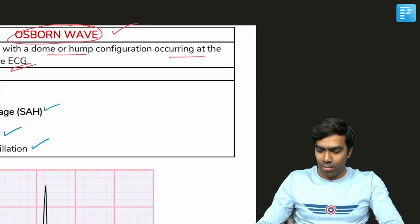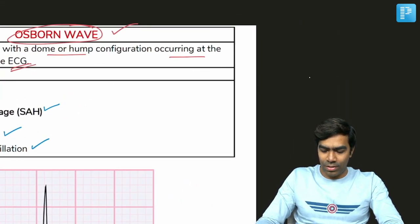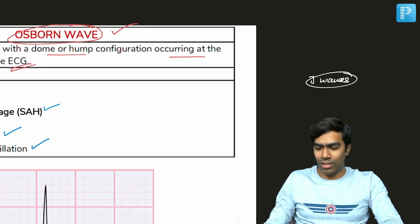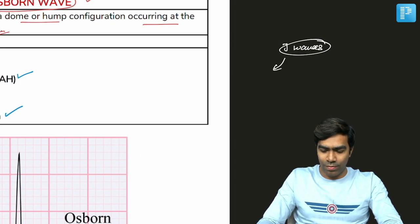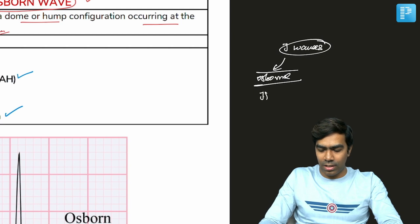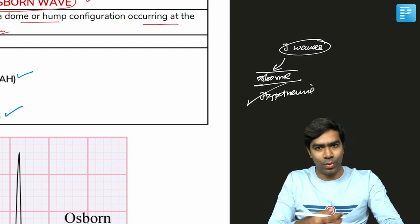When we talk about the J waves, what are the syndromes that are associated with J waves? By the way, there is an additional point I want to say. Of course, we know about Osborn waves that can be seen in hypothermia and related causes that we have discussed just a while ago.